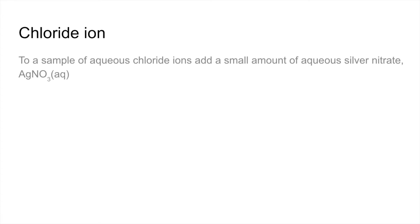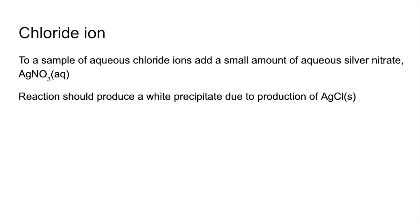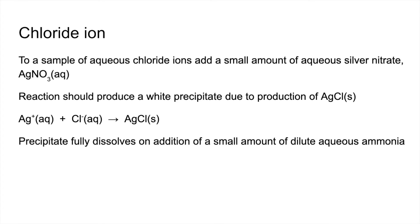For the chloride ion, add a small amount of aqueous silver nitrate (AgNO3) to your sample. The reaction produces a white precipitate of silver chloride. As a confirmation test, the precipitate will fully dissolve on addition of a small amount of dilute aqueous ammonia — useful if the precipitate isn't looking perfectly white.